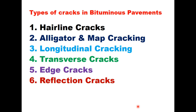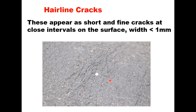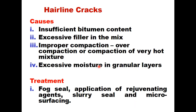There are six types of cracks which can develop in a bituminous pavement: hairline crack, alligator or map cracking, longitudinal cracking, transverse cracking, edge cracking, and reflection cracking. Hairline cracks appear as short, very fine cracks at close intervals on the surface, with width generally less than 1 mm. These occur due to insufficient bitumen content in the mix, excessive filler, improper compaction (overcompaction or compaction of a very hot mixture), or excessive moisture in granular layers. They can be treated by spraying a fog seal, applying rejuvenating agents, slurry seal, or microsurfacing.